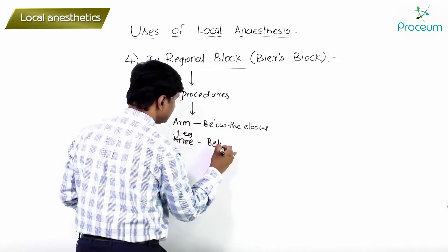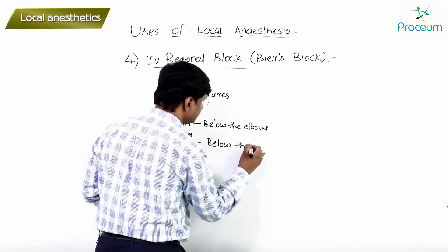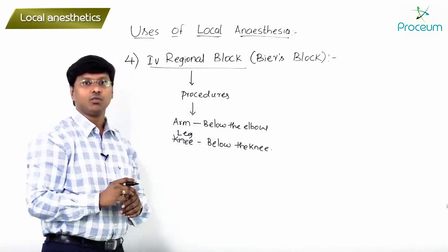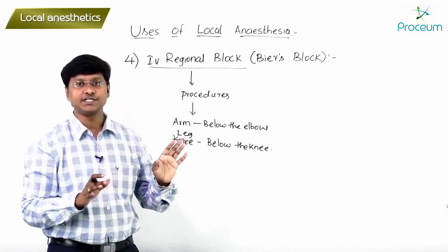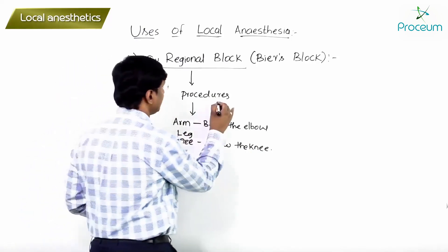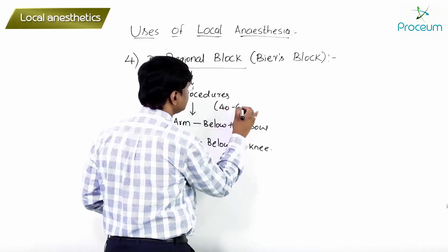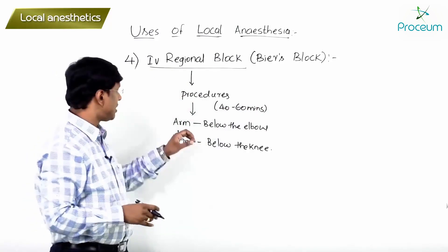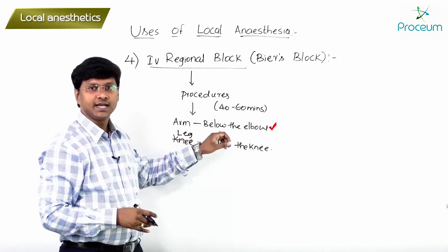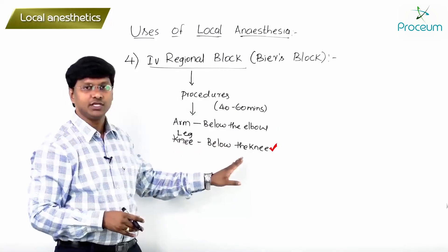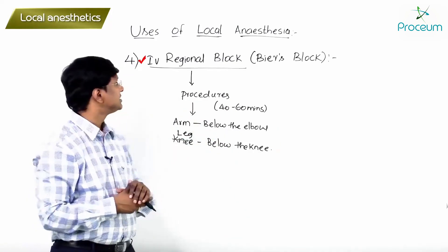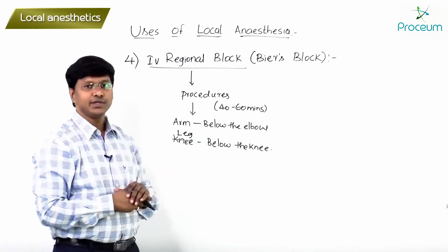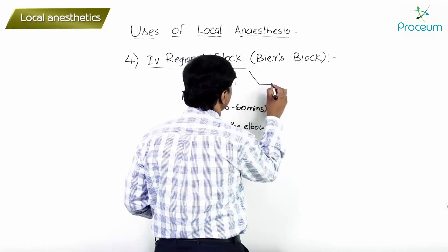This block is used for procedures taking nearly around 40 to 60 minutes — on the arm below the elbow, as well as on the leg below the knee. We can use this intravenous regional block, or Bier's block, for such cases.